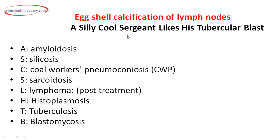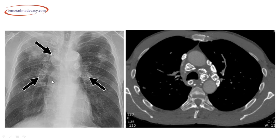In the posterior mediastinum, the most common tumor is the neurogenic tumor, neurofibroma, or dumbbell tumor. For mediastinal lymph nodes with peripheral calcification — termed eggshell calcification — remember the mnemonic: 'A Silly Cool Sergeant Likes His Tubercular Blast': Amyloidosis, Silicosis, Coal workers' pneumoconiosis, Sarcoidosis, Lymphoma, Histoplasmosis, Tuberculosis, and Blastomycosis.